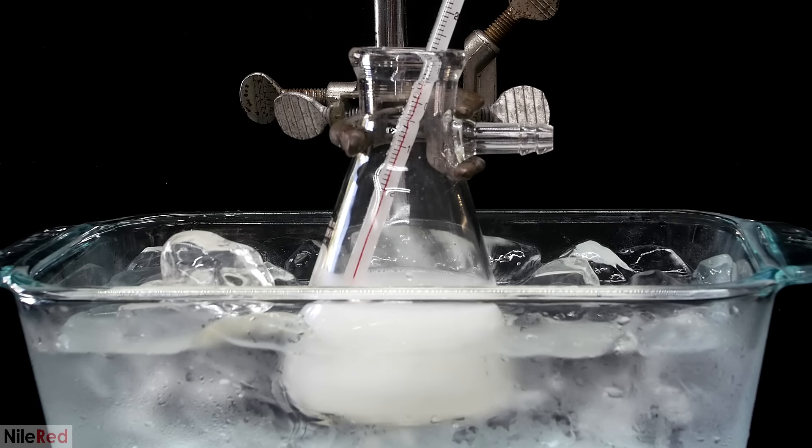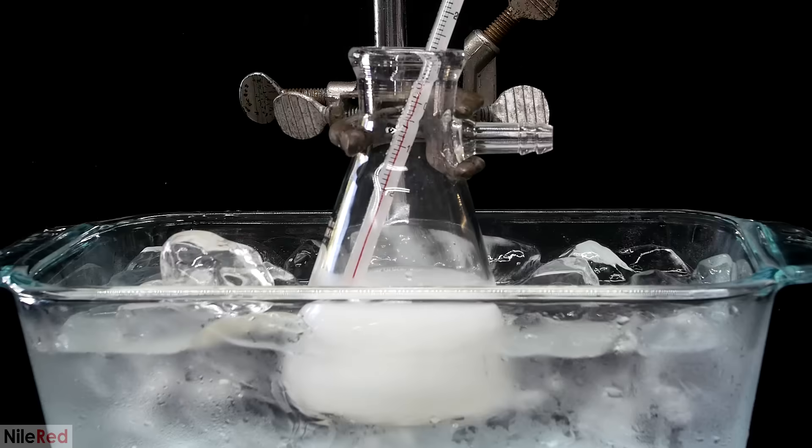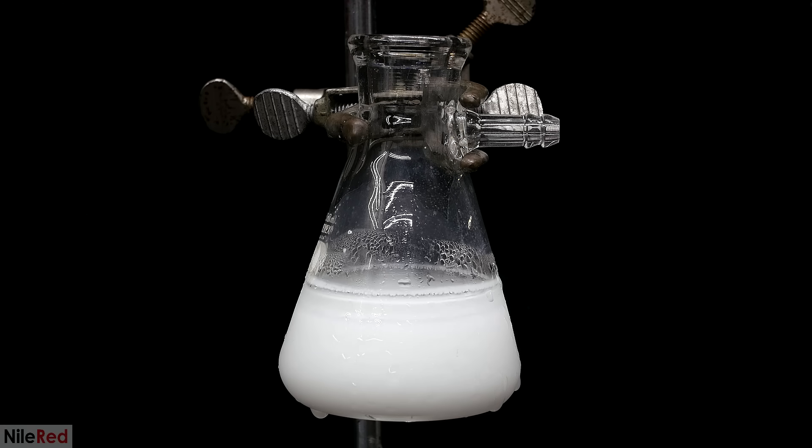When I'm done adding the potassium hydroxide, I leave it in the ice bath and continue to stir it for about an hour. When it's done, I remove the thermometer, and it's time to filter things off.